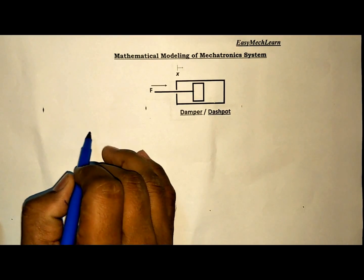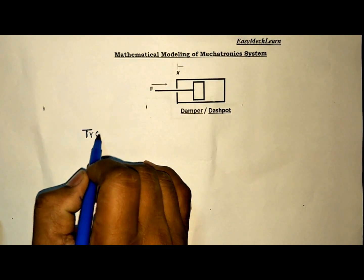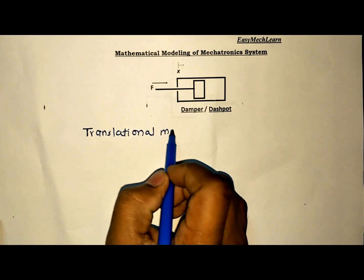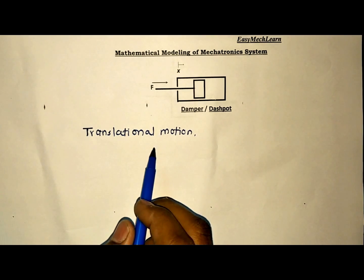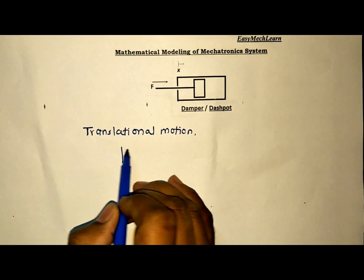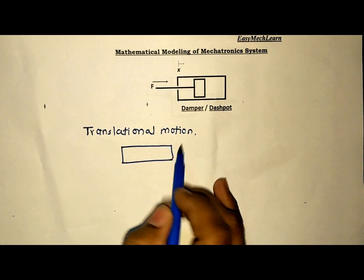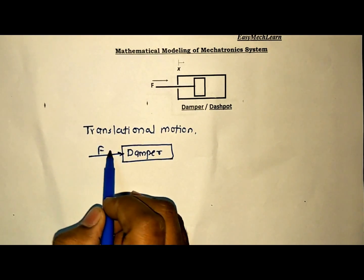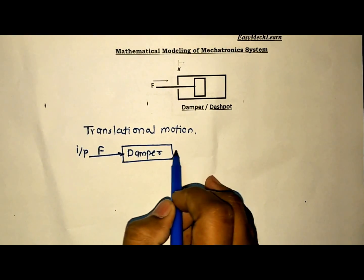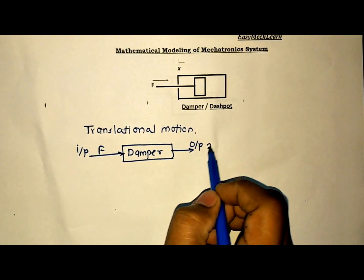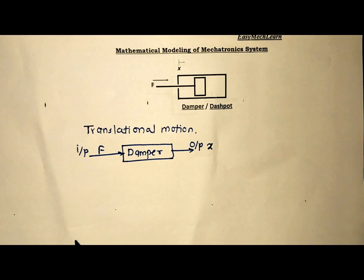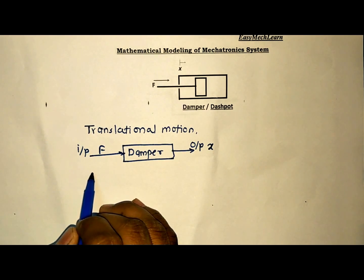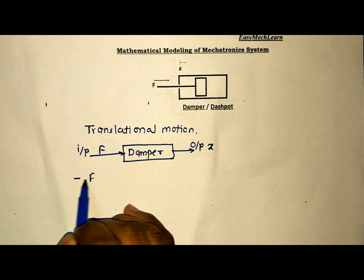Let us now find the mathematical modeling for the damper. Force F is applied on the damper, causing displacement X. We are finding the mathematical modeling for translational motion. The input is force F and the output is displacement X. As we know, force is directly proportional to velocity V.